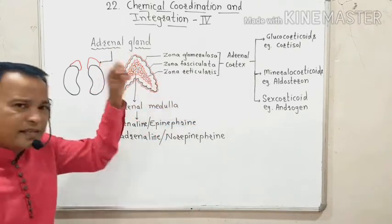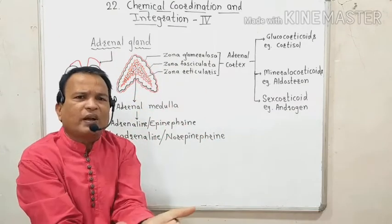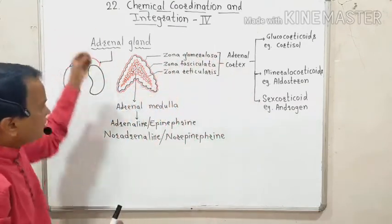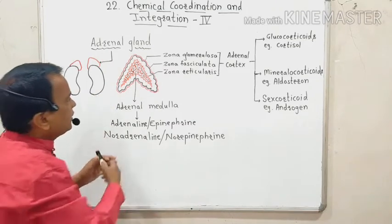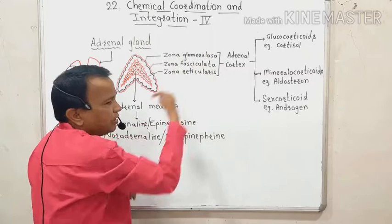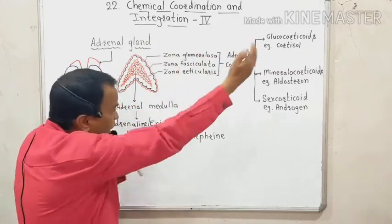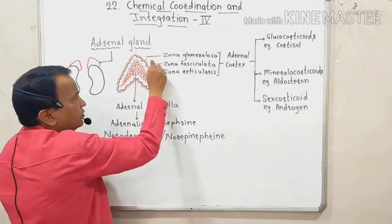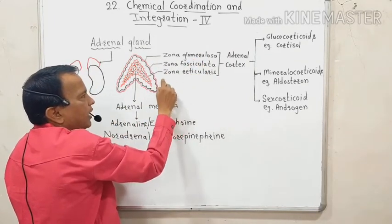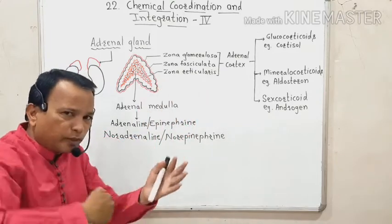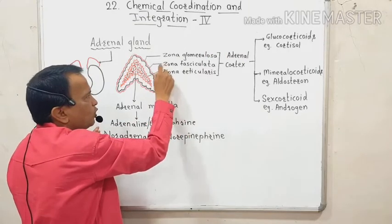The adrenal cortex is yellowish-whitish in color because of the accumulation of fatty connective tissue, while the adrenal medulla is reddish-brown in color. The adrenal cortex is made up of three layers: from outside to inside — zona glomerulosa, zona fasciculata, and zona reticularis.